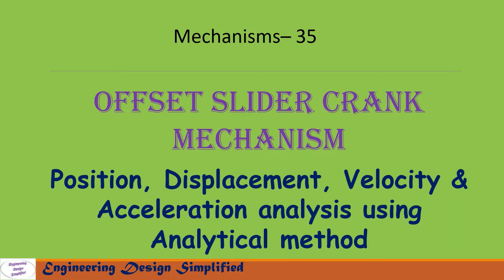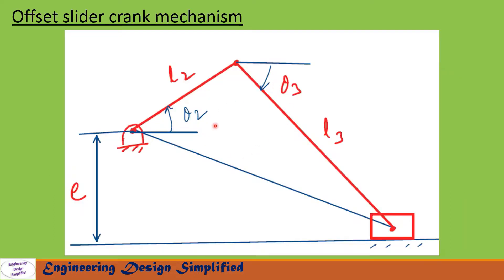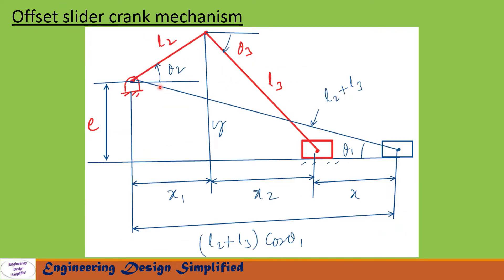Here is a typical offset slider crank mechanism whose slider is positioned below the crank center by an offset e. This link is the crank and its length is l2; the angle between horizontal and this link is theta2. This is the coupler link; its length is l3 and the angle between horizontal and the coupler link is theta3. Let us see in the coming slides how to derive the equations.